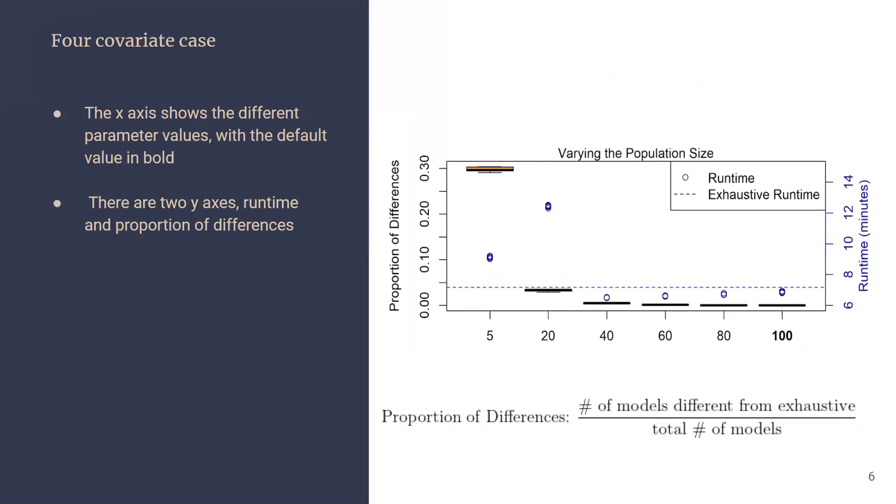We started by varying each parameter while holding all the other parameters constant or fixed at their default values. Then we would vary this singular parameter over the given array of values.